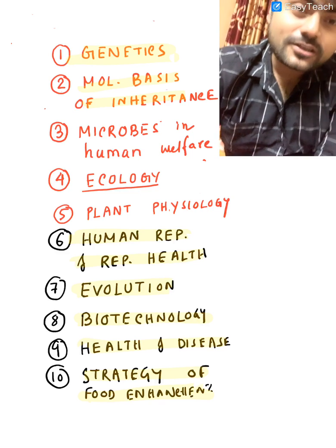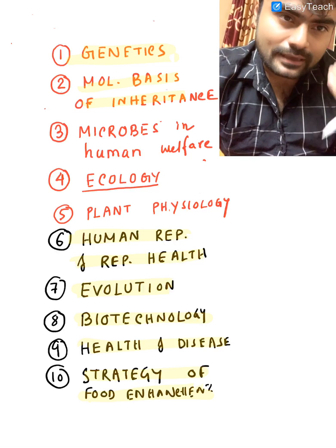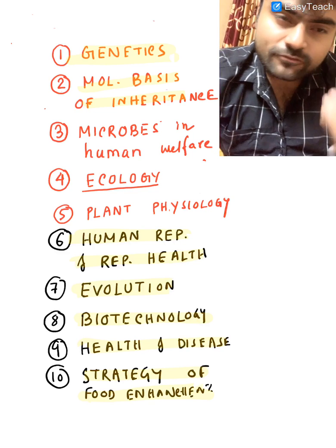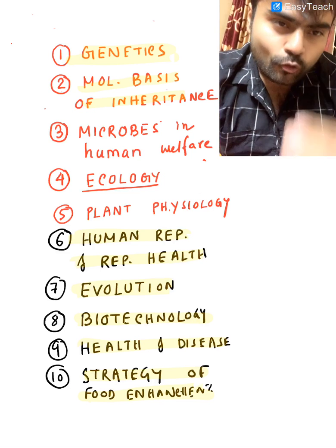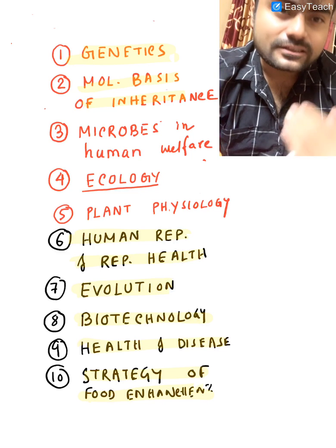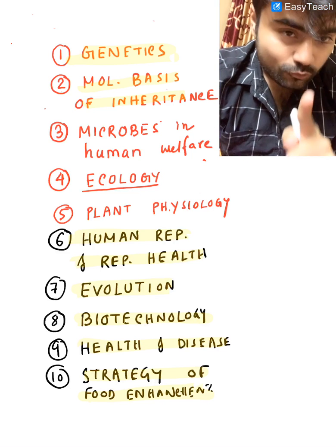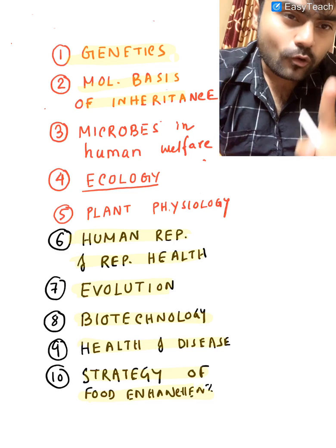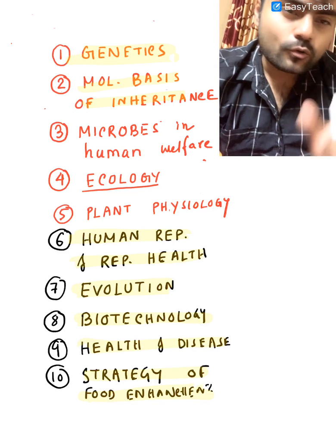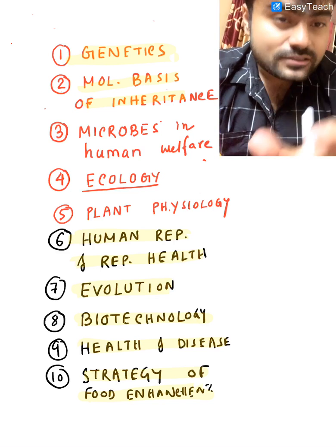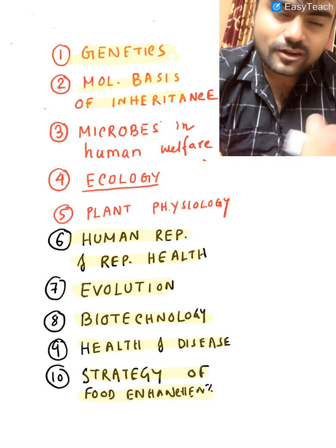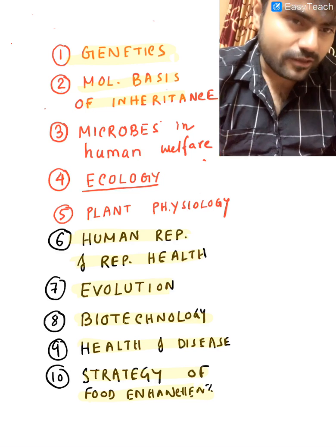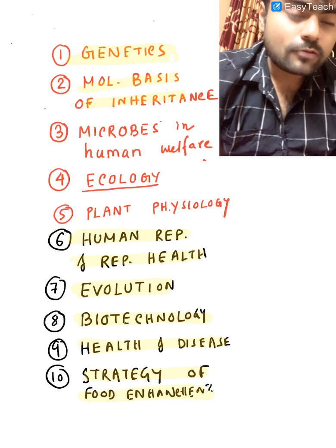You have to know everything about artificial reproductive techniques: artificial insemination, in vitro fertilization, gamete intrafallopian transfer, and zygote intrafallopian transfer. You also have to know about sexually transmitted diseases — like syphilis caused by Treponema pallidum, diagnosed by VDRL; gonorrhea by Neisseria gonorrhoeae; genital warts caused by human papillomavirus; and obviously AIDS caused by HIV.